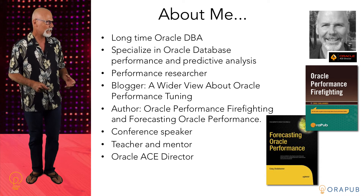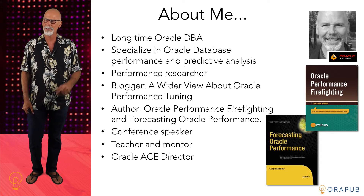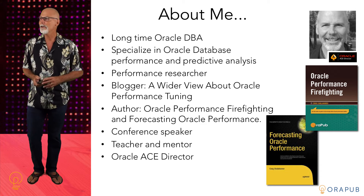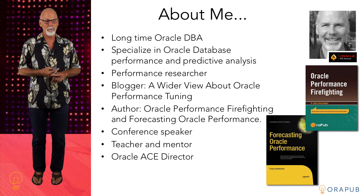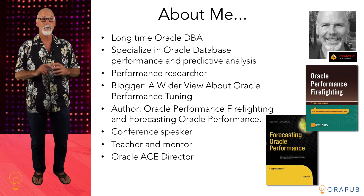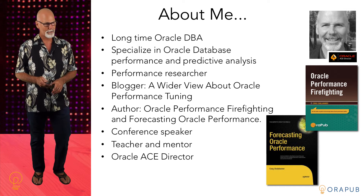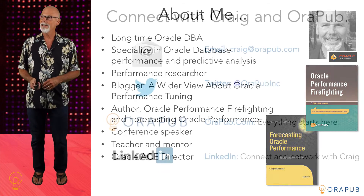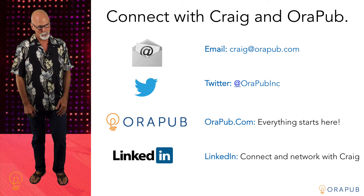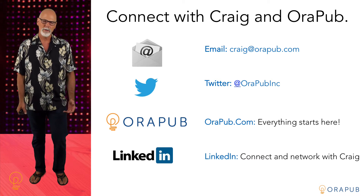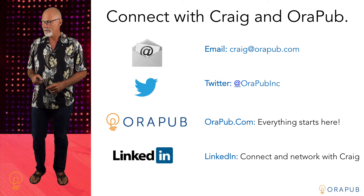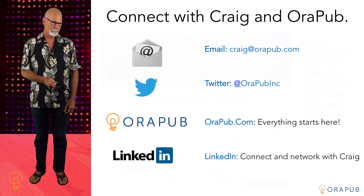Before we do that, let me introduce myself. My name is Craig Shallahammer and I'm a longtime Oracle DBA. I specialize in Oracle database performance, predictive analysis, and capacity planning. I do a lot of performance research and post it on my blog so everyone can benefit. I'm the author of a couple of books I'm really proud of: Oracle Performance Firefighting and Forecasting Oracle Performance. I do a lot of conference speaking and teaching, and I get the opportunity to mentor quite a number of Oracle DBAs. I'm also an Oracle ACE Director. If you want to connect with me, the best way is to email me at craig@orpub.com. You can also follow me on Twitter at OraPubInc.